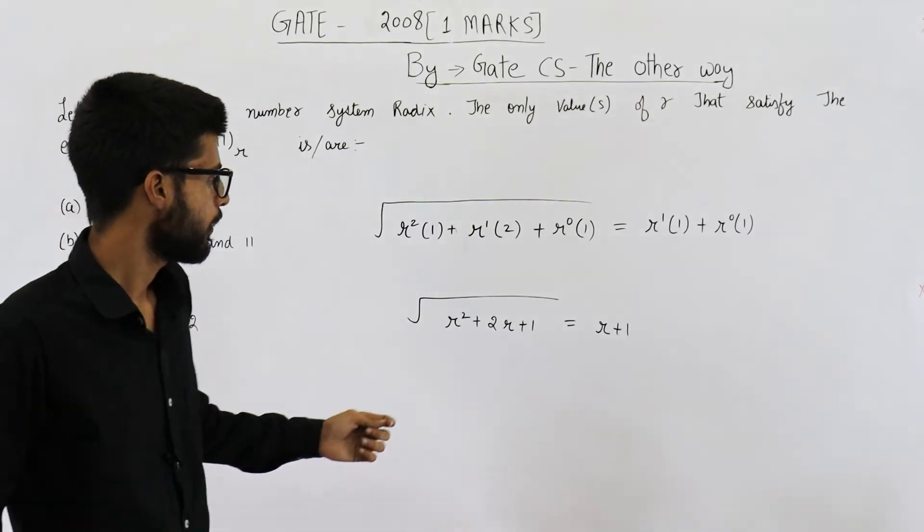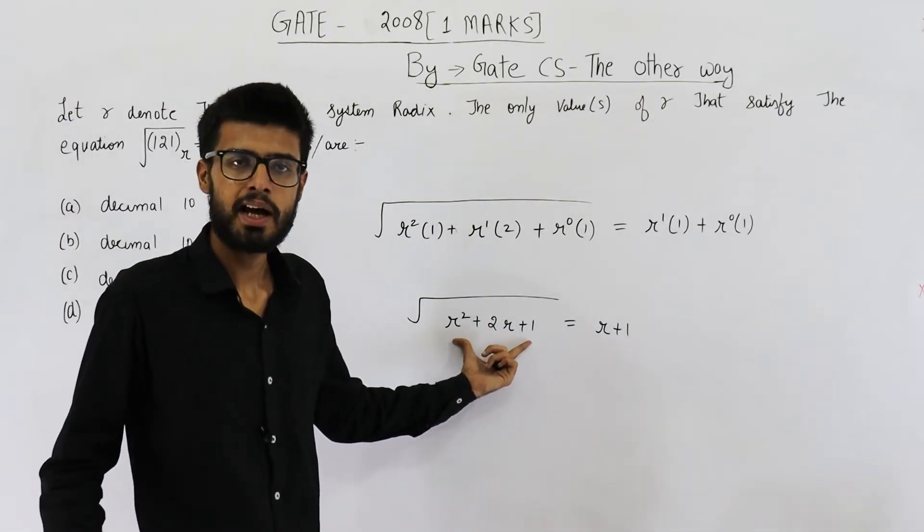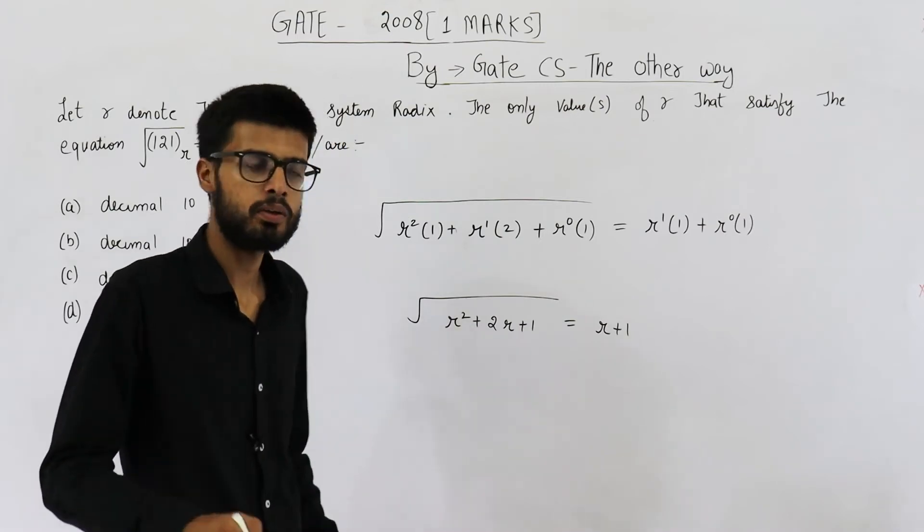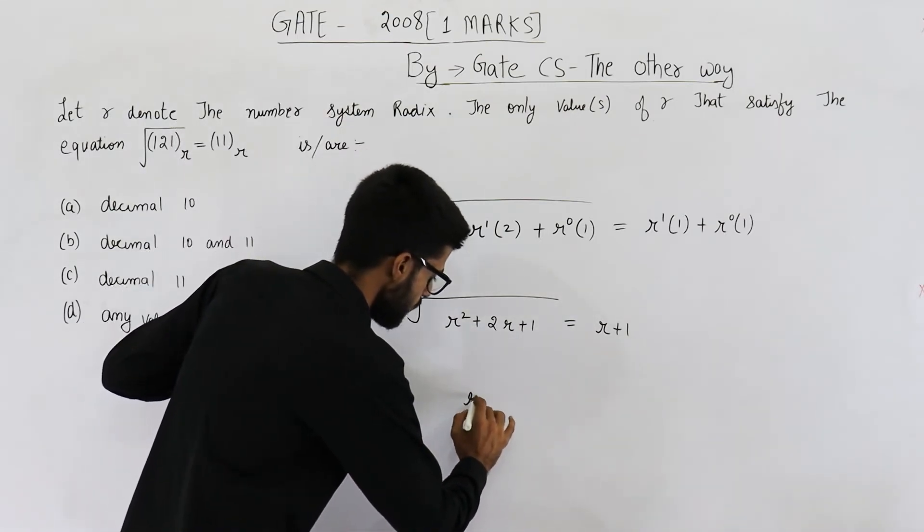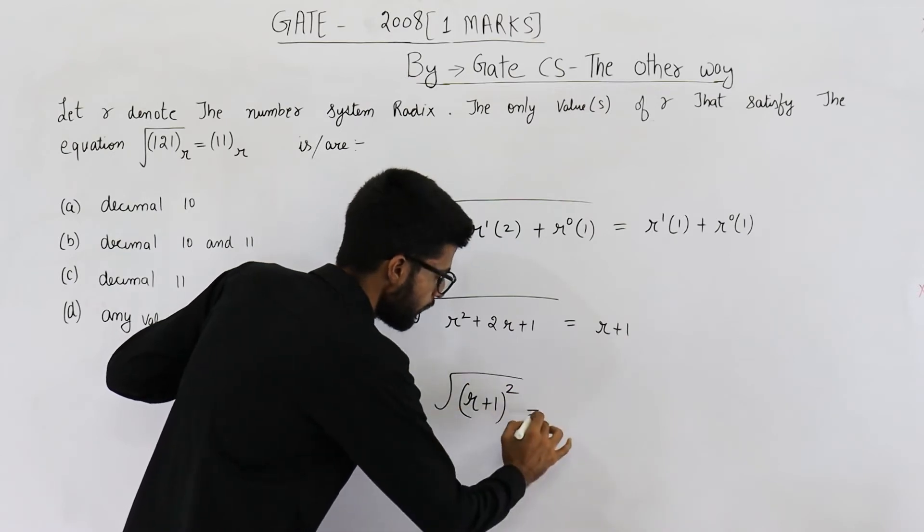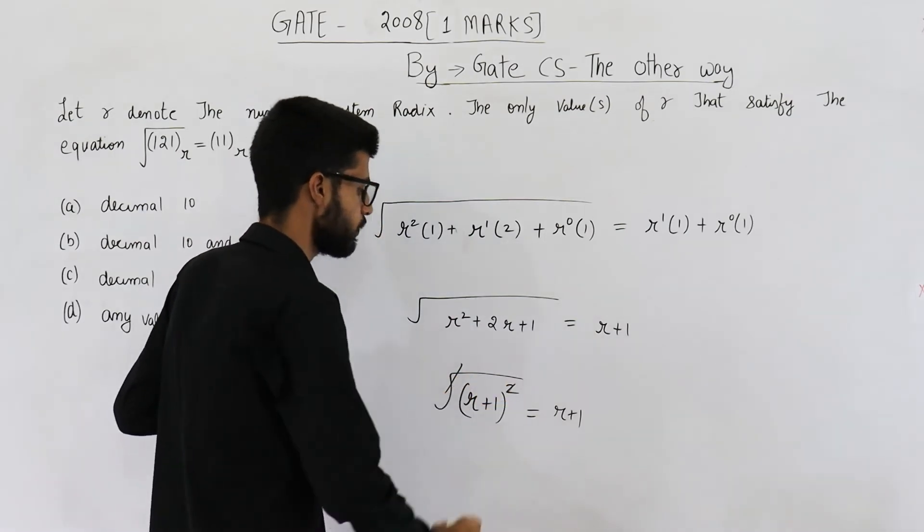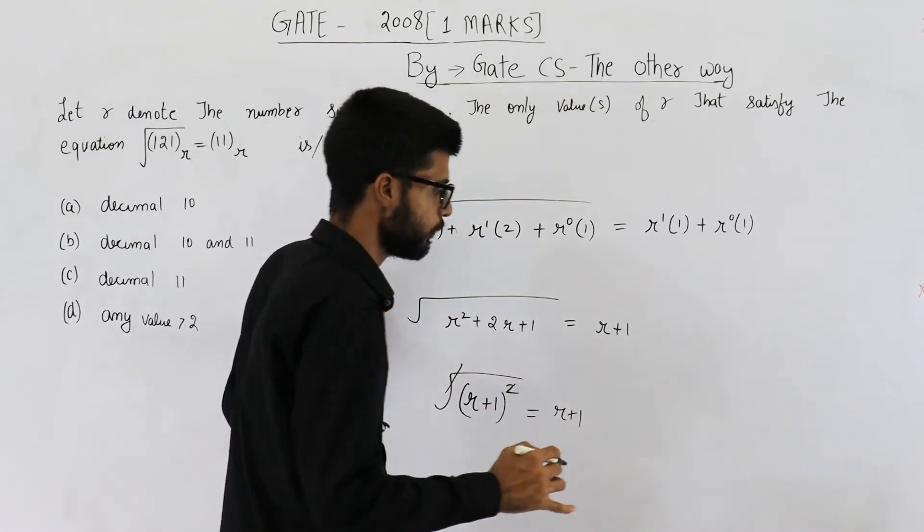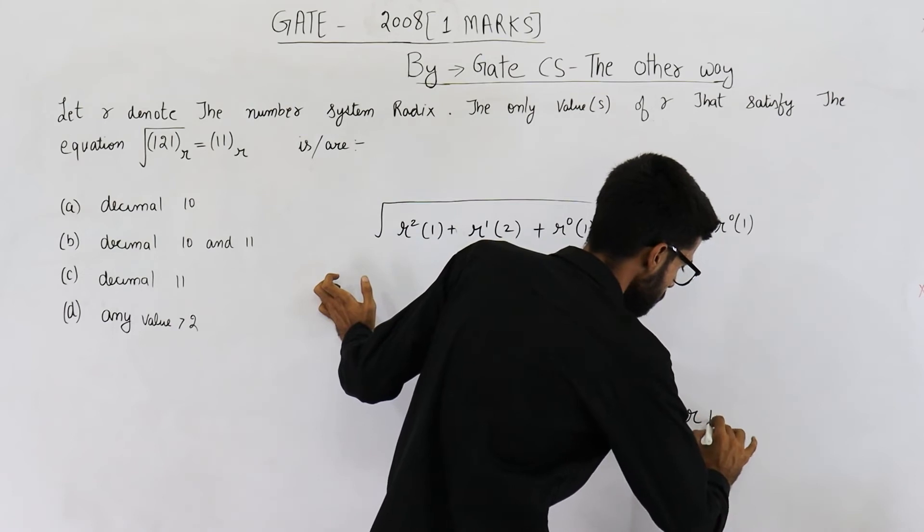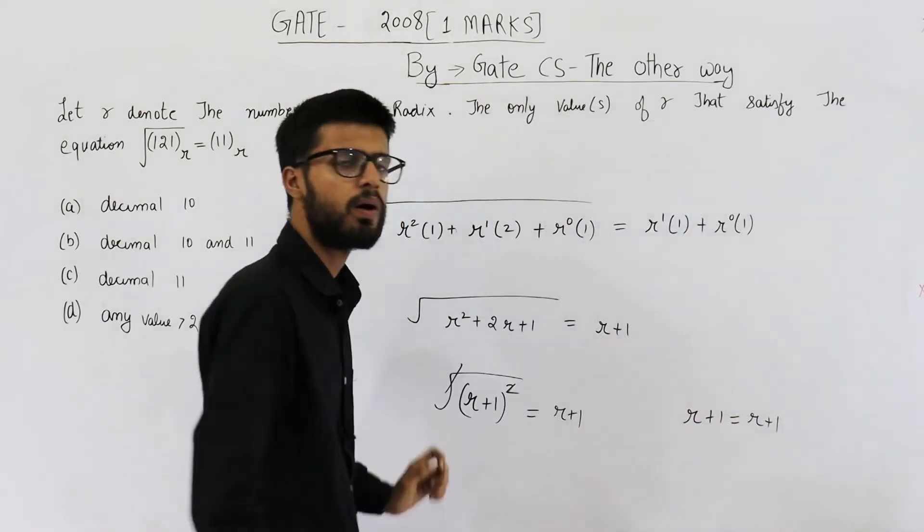Now you can see these three terms can be combined and written as r plus 1 whole square. So it is square root of r plus 1 whole square equals r plus 1. This under root and whole square will get cancelled. So the equation that we get is r plus 1 equals r plus 1.